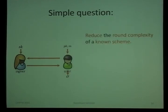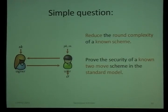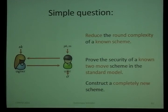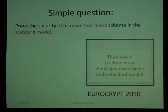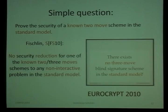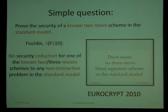We want to reduce the number of rounds. The obvious approach is to reduce the number of rounds of a known scheme, but we have no idea how this works. Alternatively, can we prove one of the two-move schemes without the random oracle or the interactive assumption? Or we construct a completely new scheme. This slide I showed at EuroCrypt last year, where I stated that two-move blind signatures simply don't exist in the standard model — but of course, that was a motivating slide.